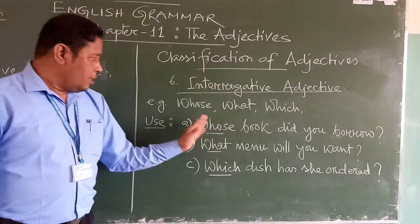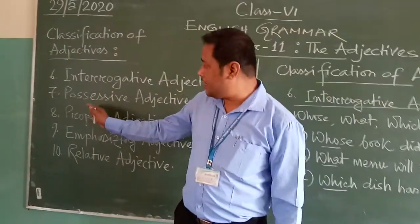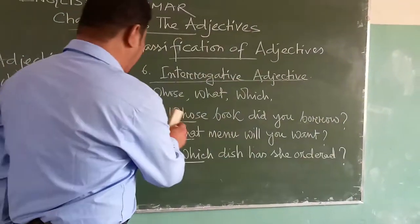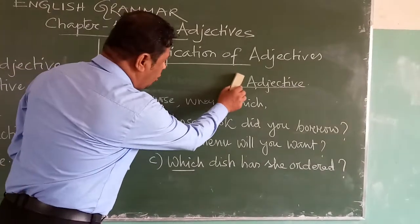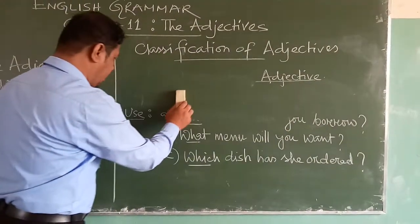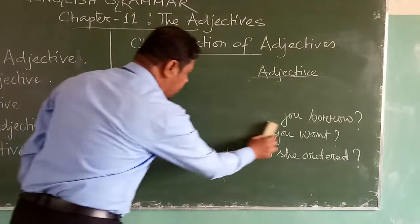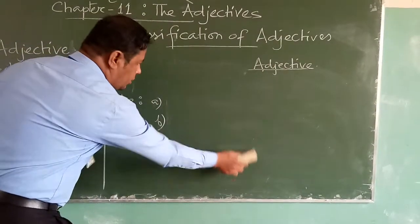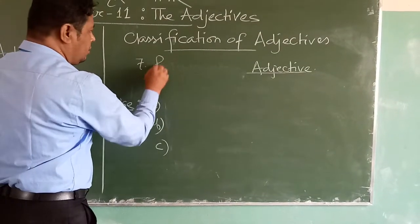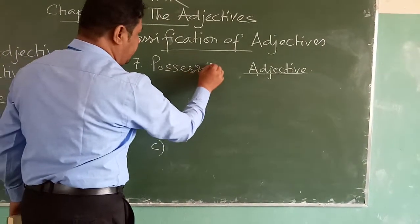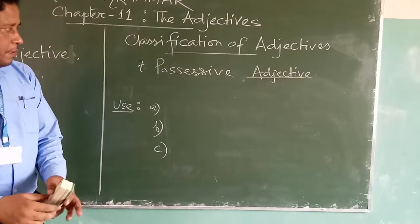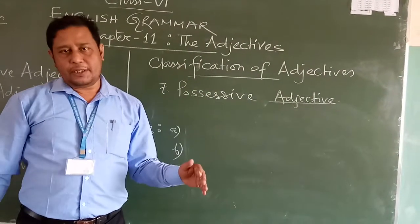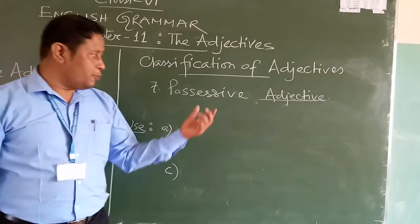Now I am going to explain the next category: possessive adjective. Students, you know what possessive means — I explained it in my pronoun class. Possessive means what you possess, what you occupy, or what is your property. The possessive adjectives are: my, our, your, his, her, their, its.